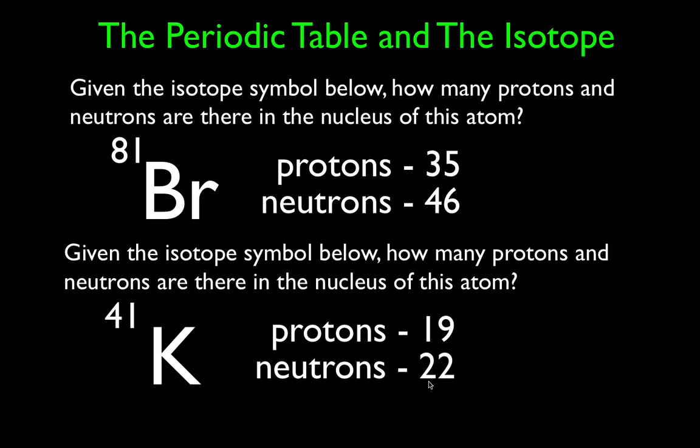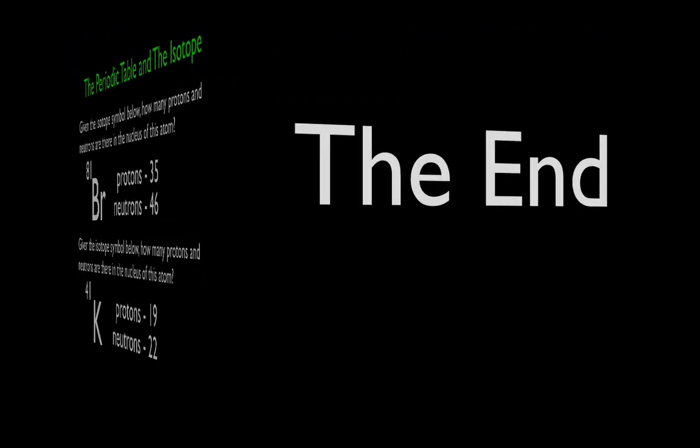So those are some basic problems. Given the isotope symbol, you should be able to figure out how many protons, neutrons, and electrons there are. And if you're given the number of protons, neutrons, and electrons, you should be able to add those together and come up with the isotope symbol. Thank you very much for watching. I hope you found that helpful. If you did, you can give me a thumbs up or leave a comment below. We will see you in the next video.